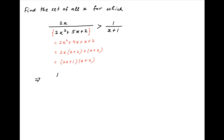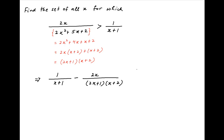Therefore, the above inequality can be written as 1 upon (x plus 1) minus 2x upon (2x plus 1)(x plus 2) is less than 0.